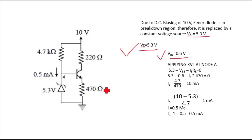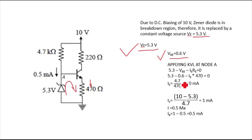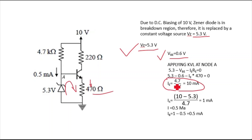Applying KVL at node A: 5.3 − VBE − IE × RE = 0, which gives 5.3 − 0.6 − IE × 470 = 0. Solving: IE = 4.7 / 470 = 10 mA.